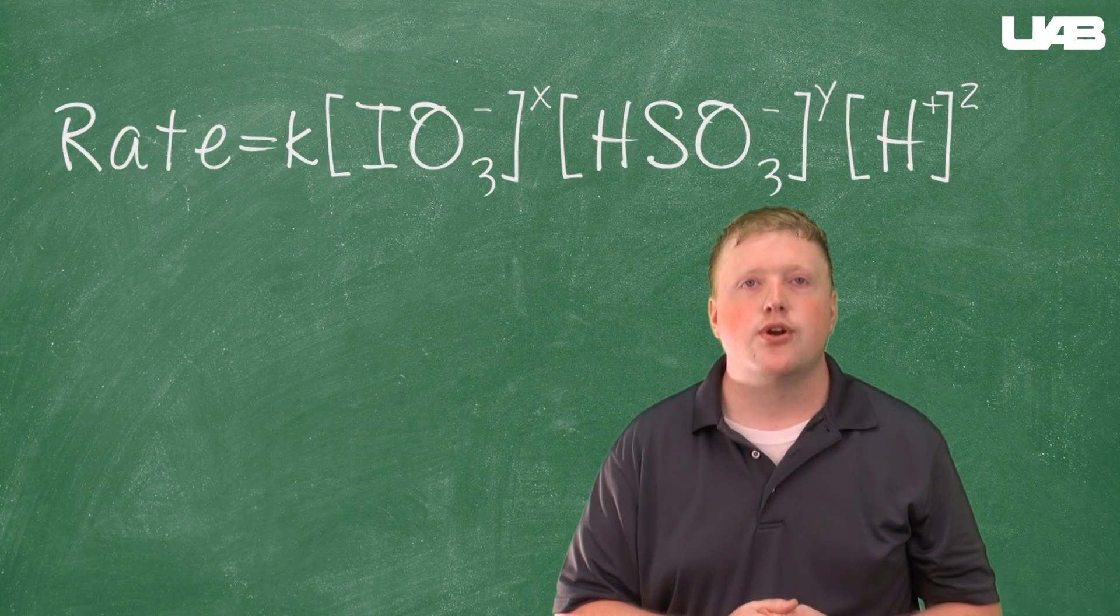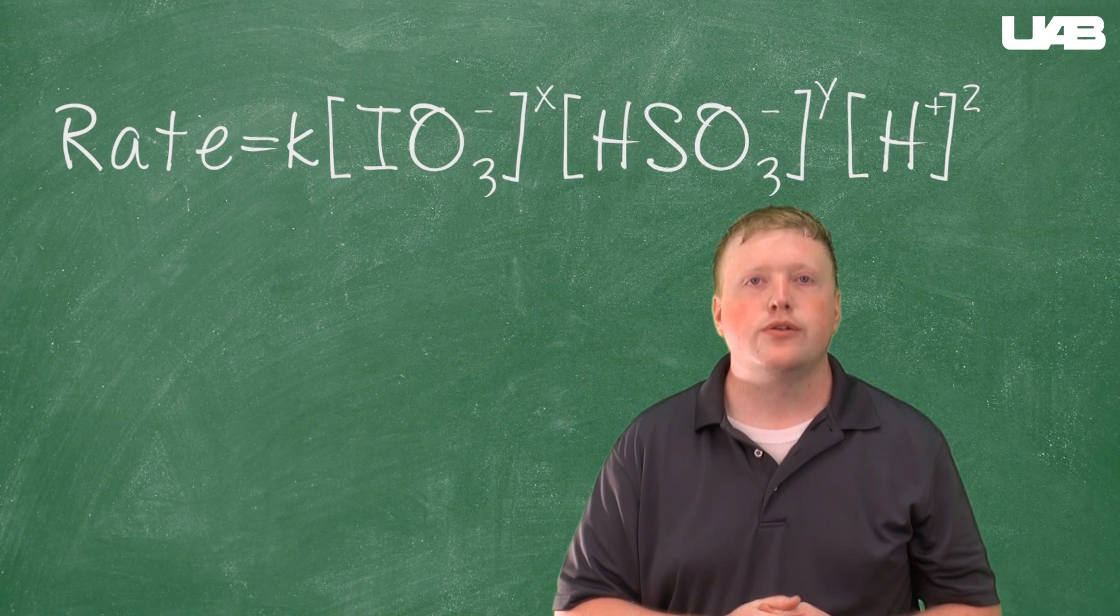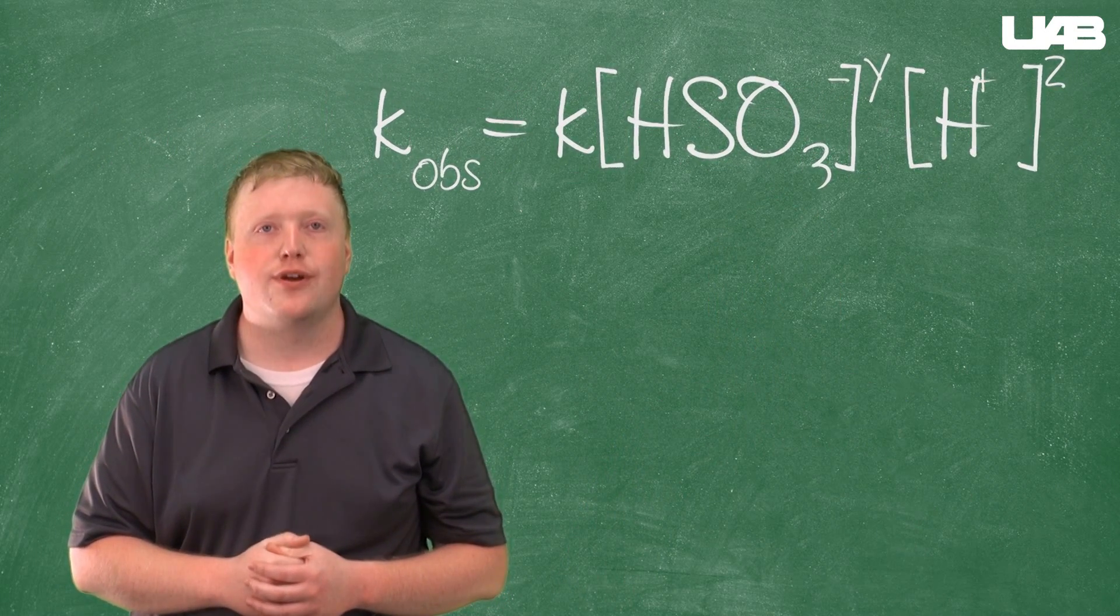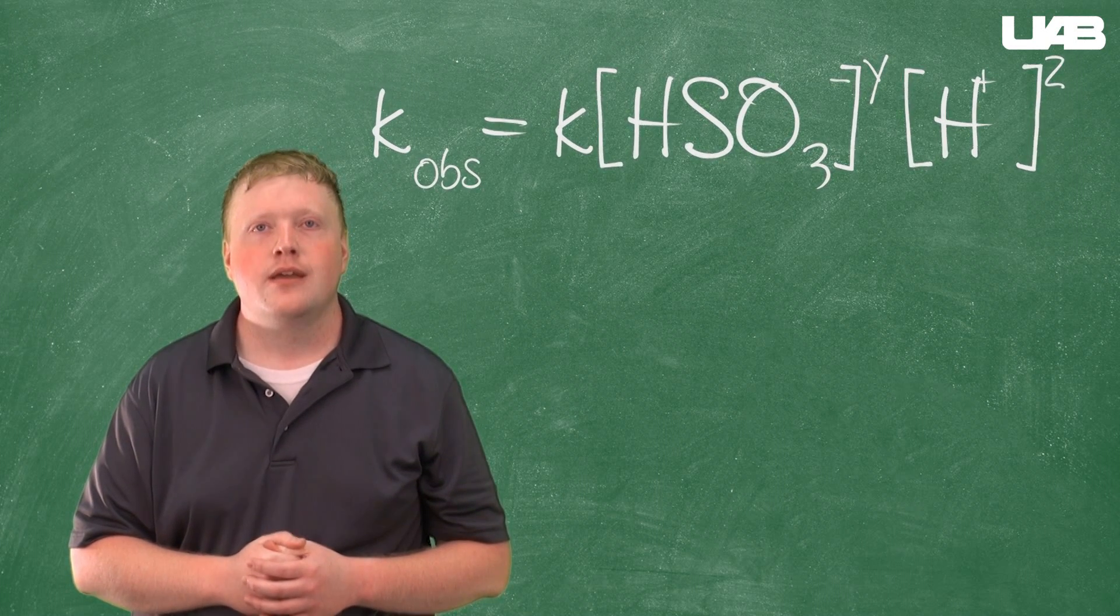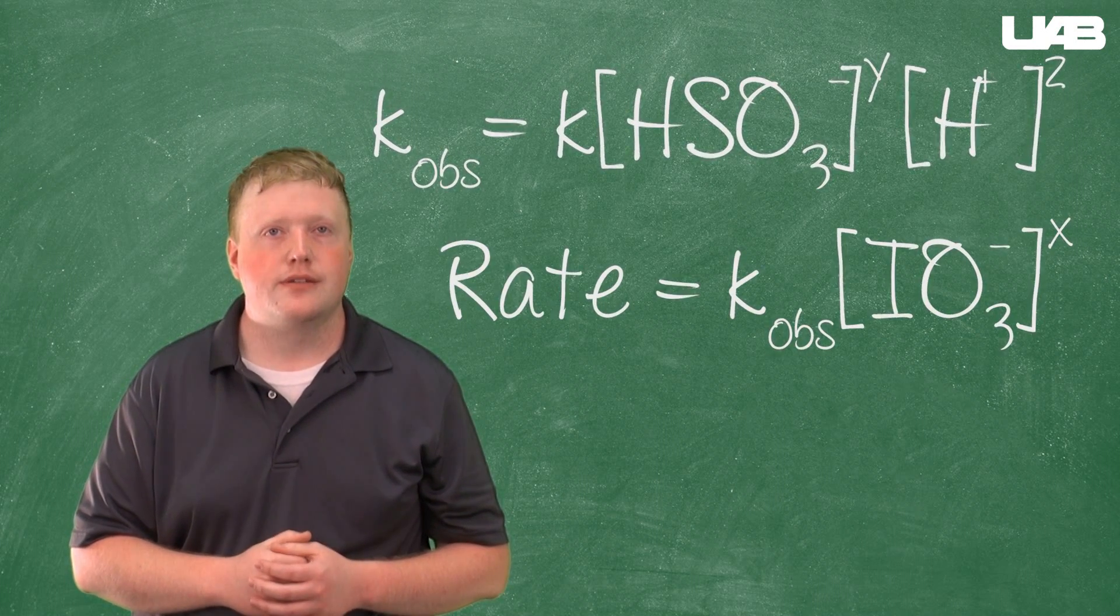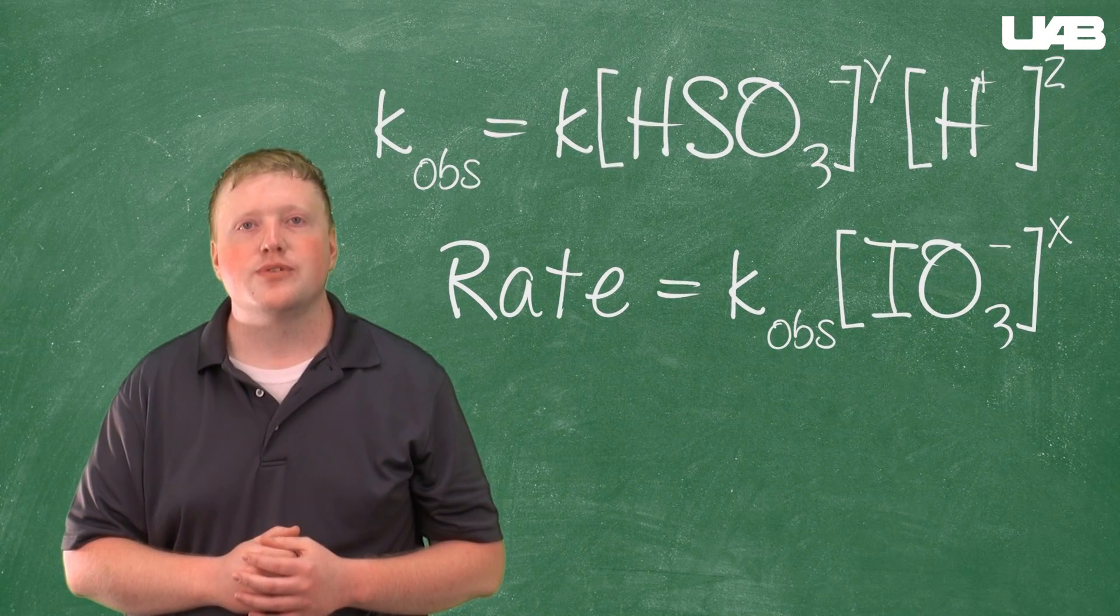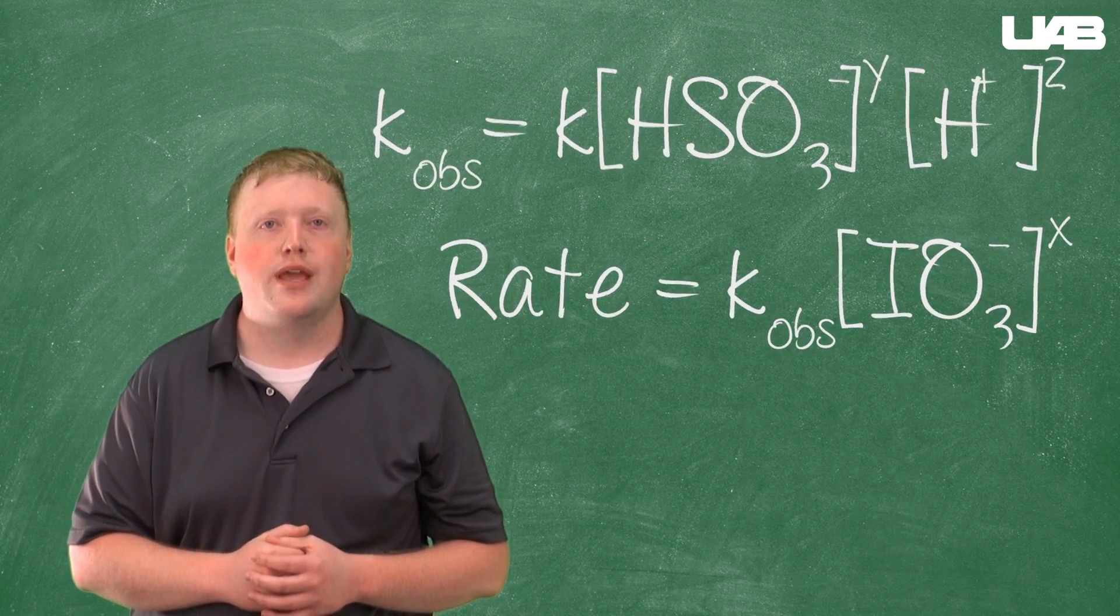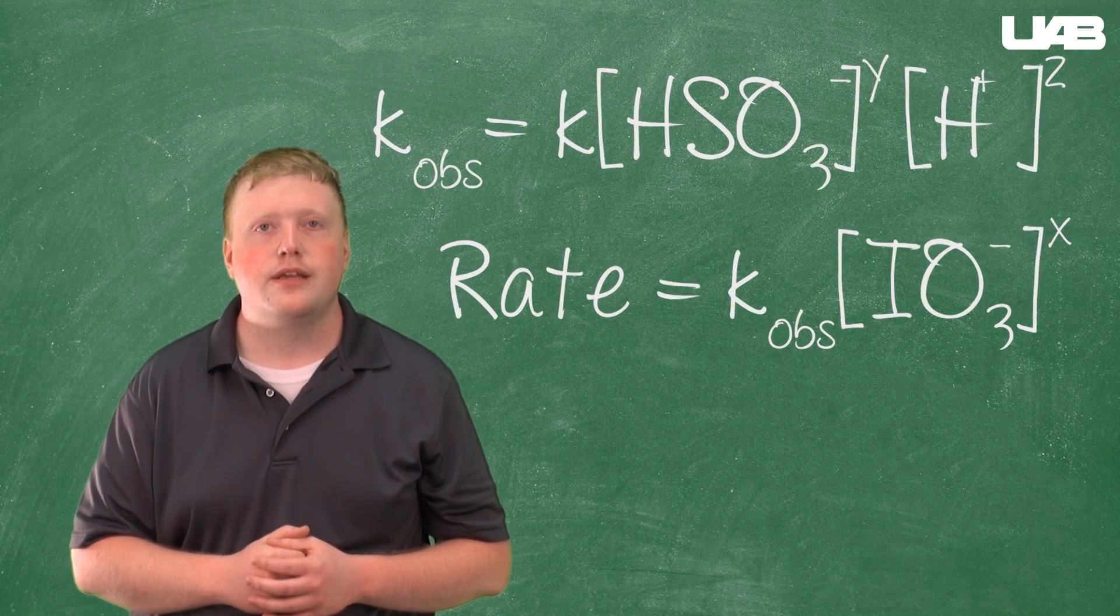Then we can change our K constant to include both of these terms. We'll call this K observed now to reflect this change. Now our rate law looks like this: Rate equals K obs times the concentration of iodate raised to the x. That's a little easier to manage.